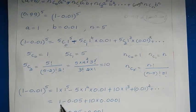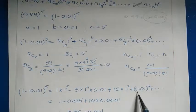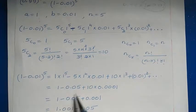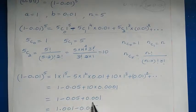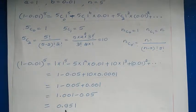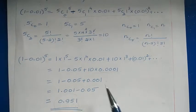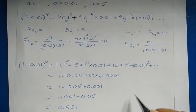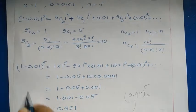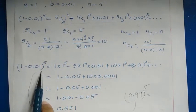Simplifying: 1 − 5 × 0.01 = 1 − 0.05, and 10 × (0.01)² = 10 × 0.0001 = 0.001. So we get 1 − 0.05 + 0.001 = 1.001 − 0.05 = 0.951. This is the approximate value of 0.99⁵, computed by writing it as (1 − 0.01)⁵ and using the first three terms of the binomial expansion.